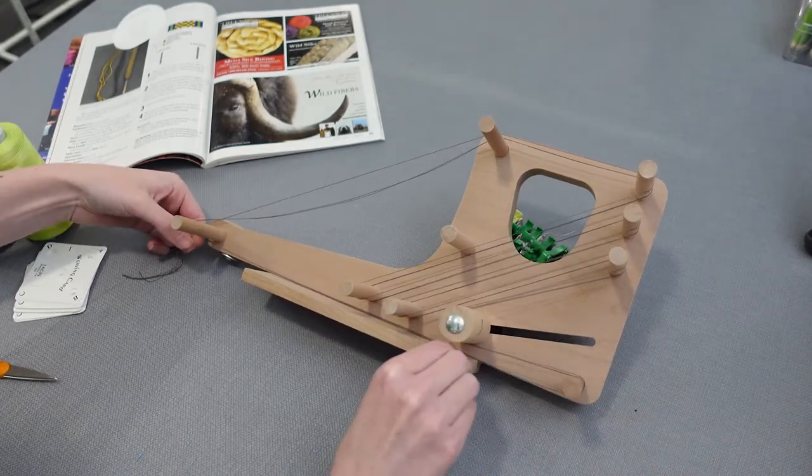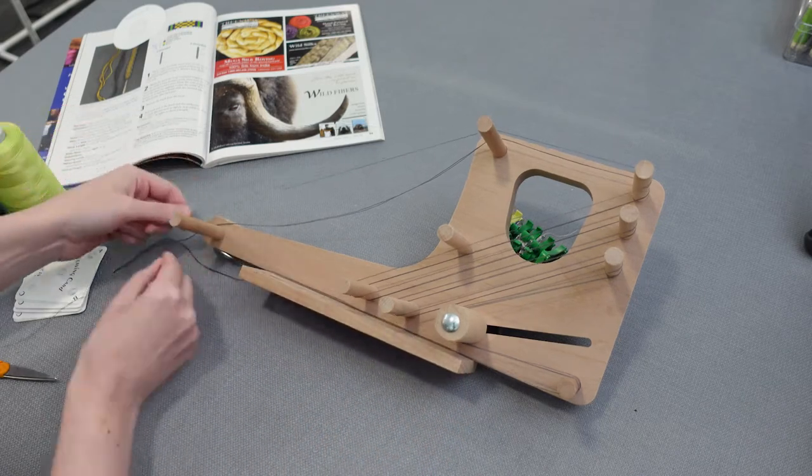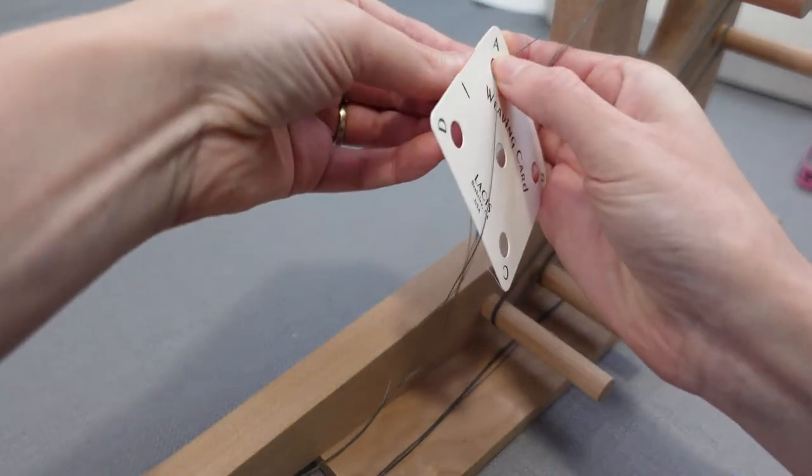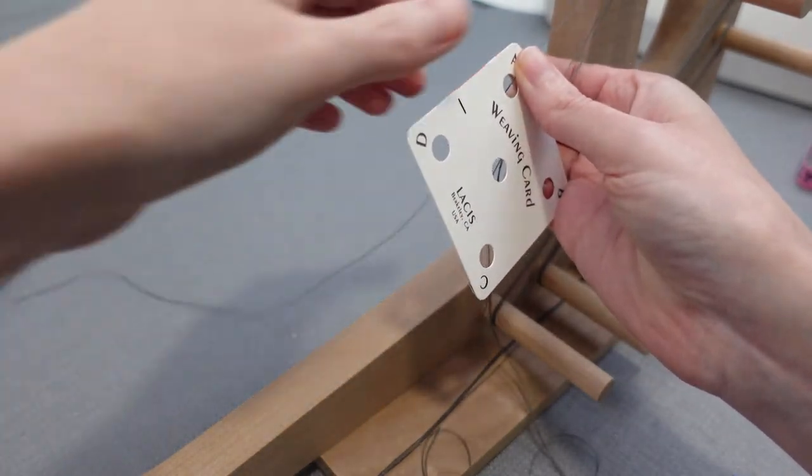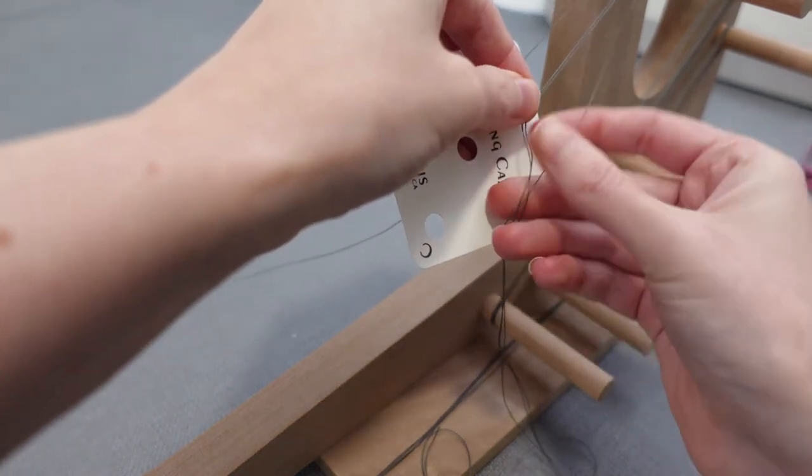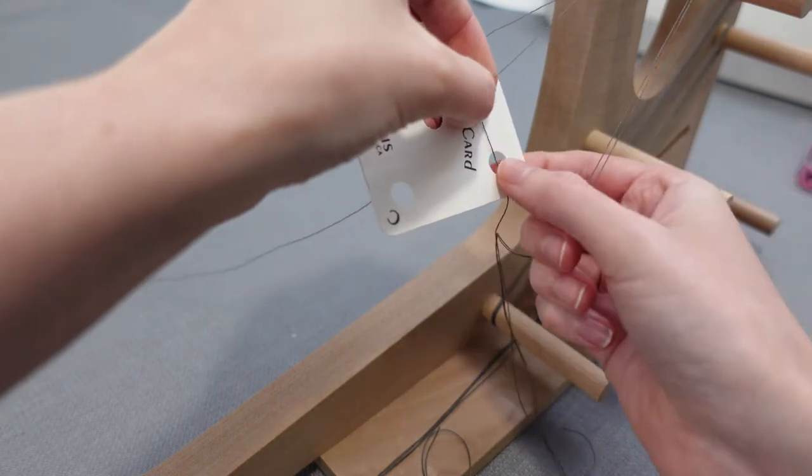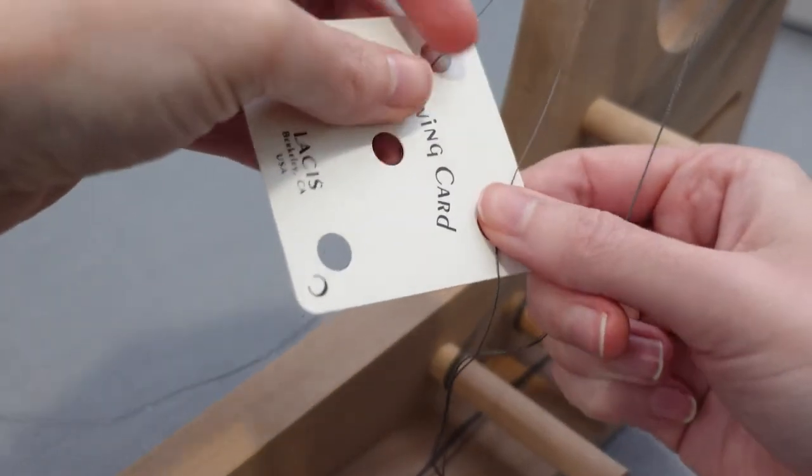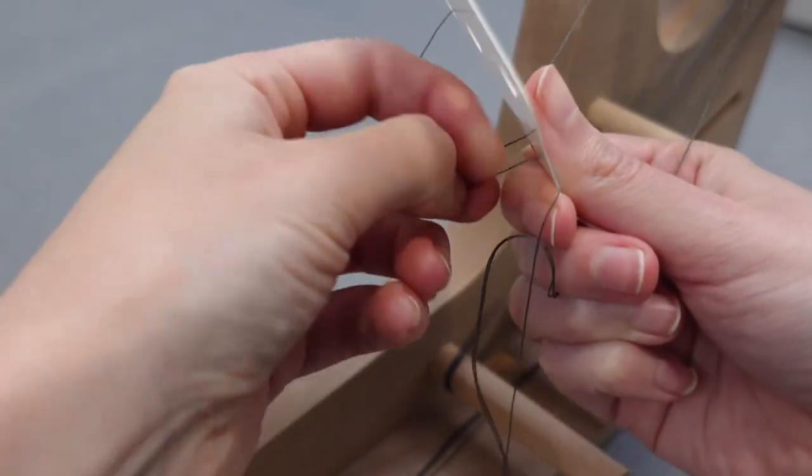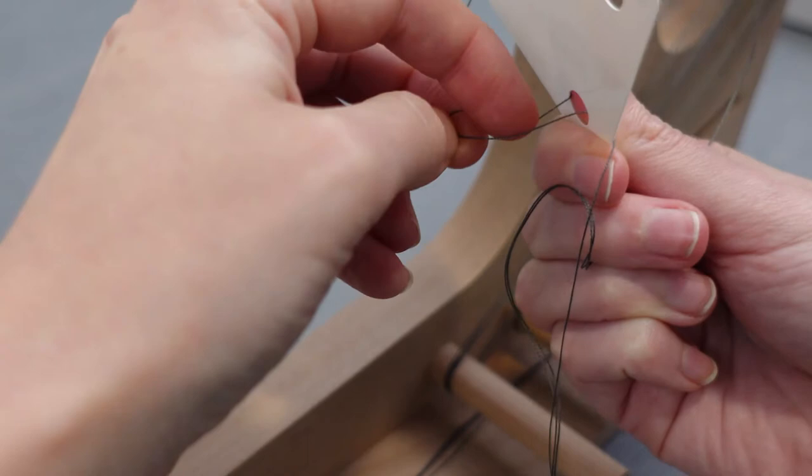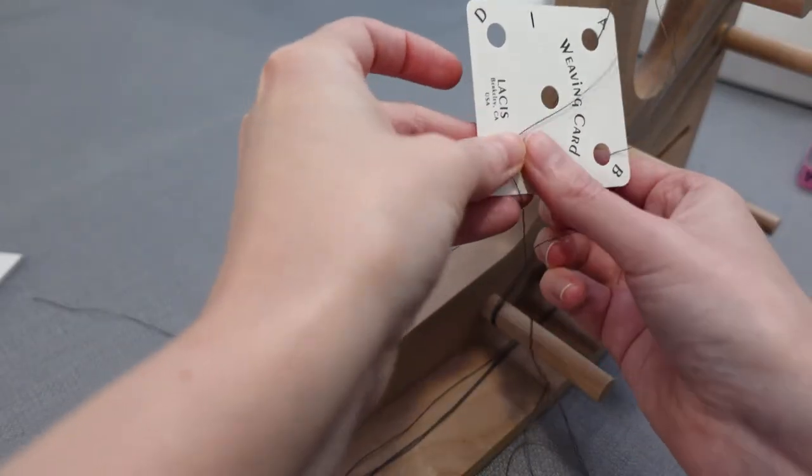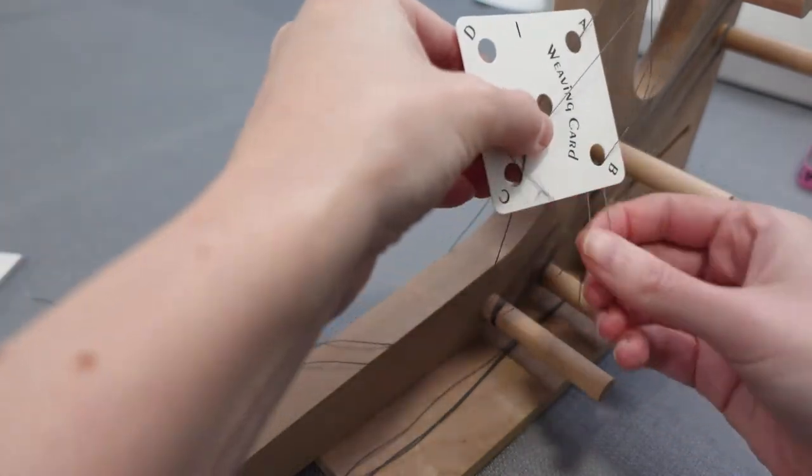To warp the inkle loom using cards, warp four ends around pegs, holding the bundle of ends in your hand. Then thread the ends through each card in either the S or Z direction - your pattern will indicate this at the bottom of the draft. I'm starting off with the Z direction, meaning the threads go right to left through the card. Once a card is warped, tie the ends using a surgeon's knot. Remember that side A and D should be facing upwards after you've finished warping the card.